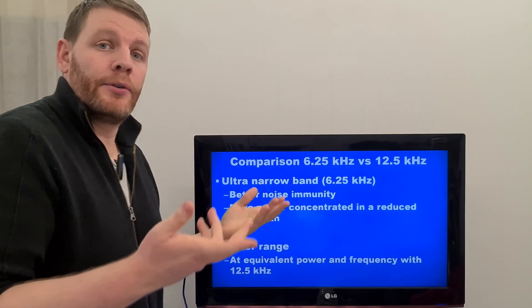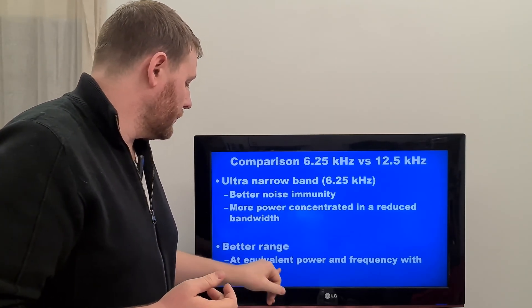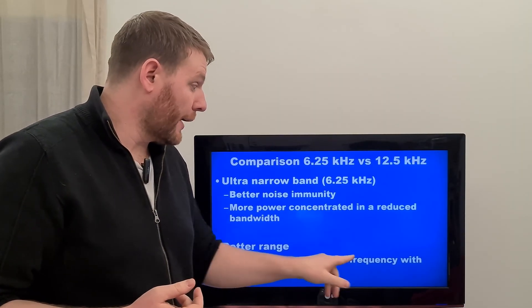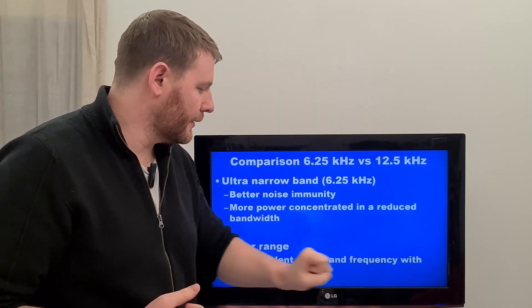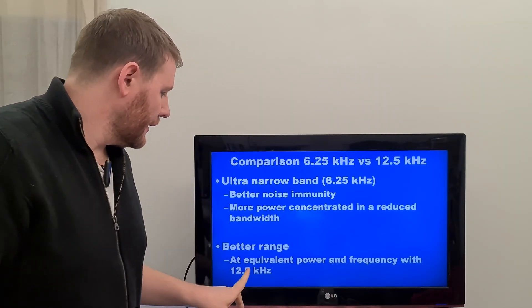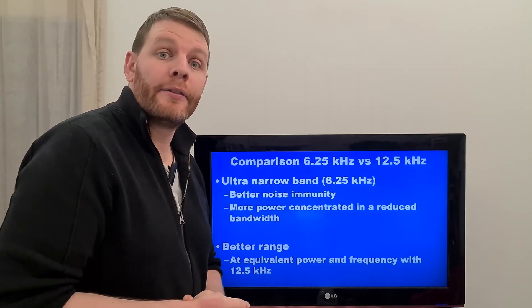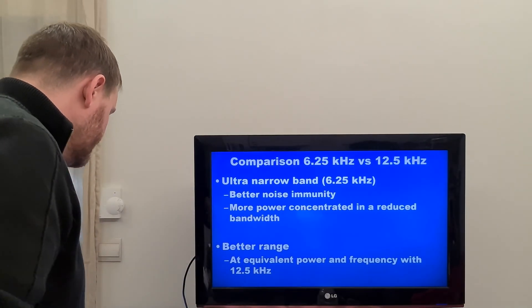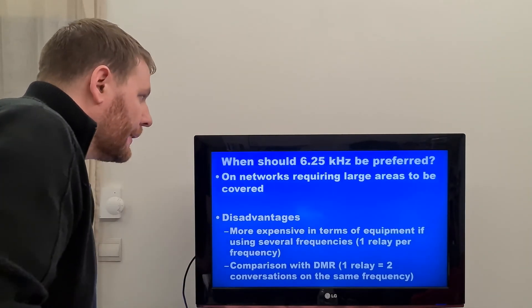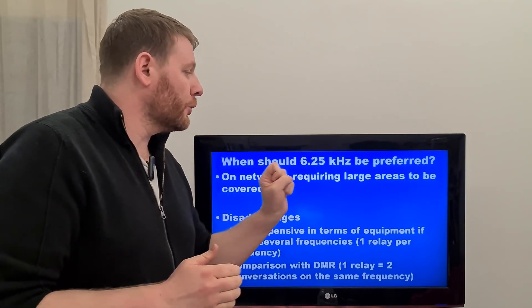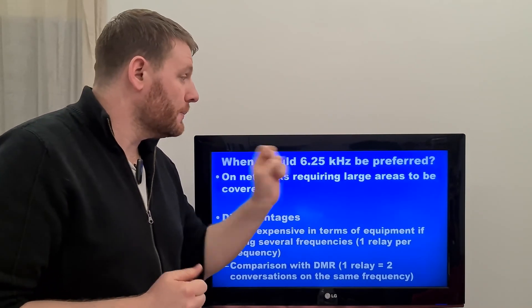This is produced a better range when you compare to equivalent power and frequency. Now, when should 6.25 kHz bandwidth should be preferred?